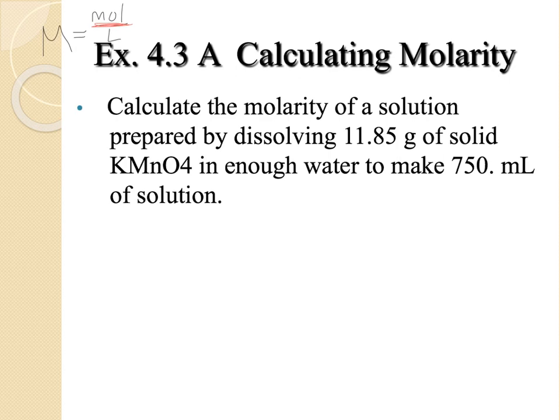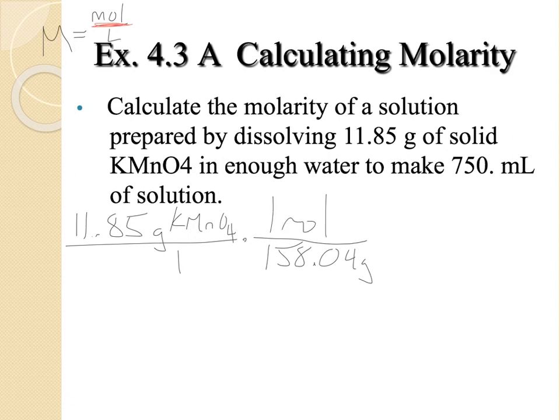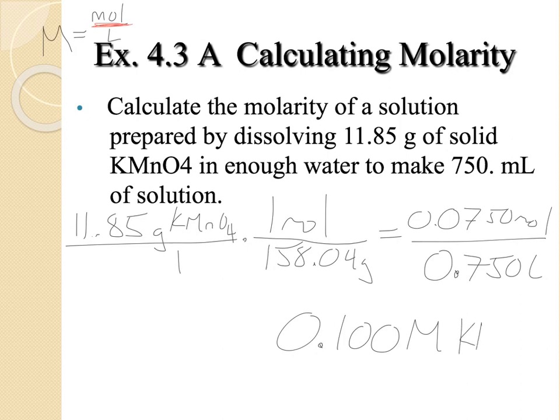Calculate the molarity of a solution prepared by dissolving 11.85 grams of potassium permanganate in enough water to make 750 milliliters of solution. So grams, we always think we need to get to moles. When in doubt, convert to moles. We get a molar mass of 158.04 grams per mole. And that's going to give me 0.0750 moles. Now, at that point, we have the volume, too. 750 milliliters is 0.75 liters. So we get 3 sig figs, a 0.1 molar solution of KMnO4.